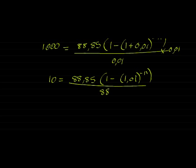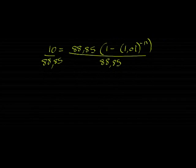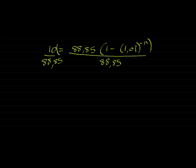We divide both sides with 88.85. And I'm not going to simplify it here, because simplifying would mean that I'm going to have to round off. So let's just keep this fraction, keep it for as long as possible. So then I see, then I have 10 over 88.85 is equal to 1 minus 1.01 to the power of negative n.